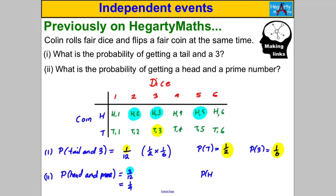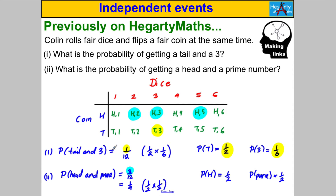What about the probability of a head and a prime number? The probability of a head is one half. The primes on a dice are two, three, and five — that's three out of six outcomes, which simplifies to one half. The overall answer of one quarter could have been obtained by doing one half multiplied by one half. So in cases where events are independent, you can multiply each individual probability to get a combined probability of both things happening.